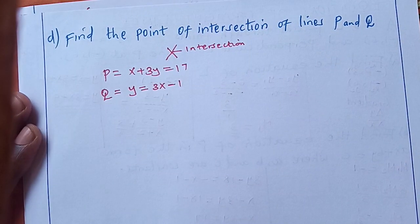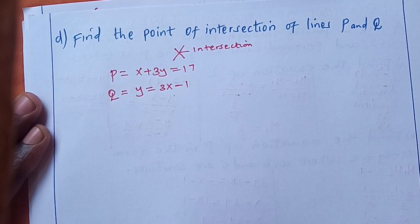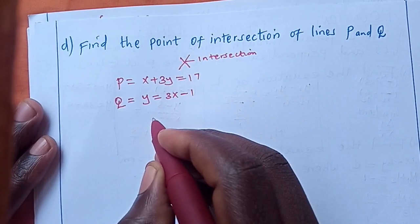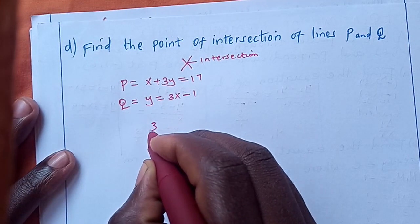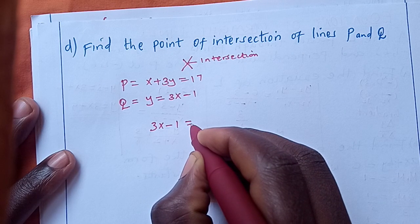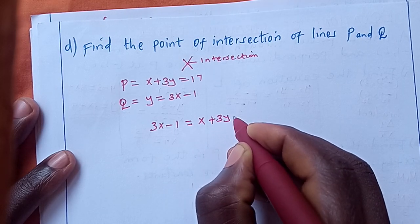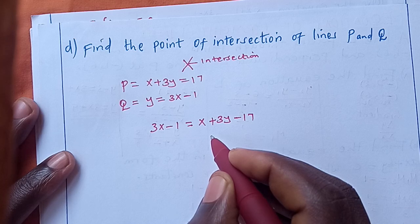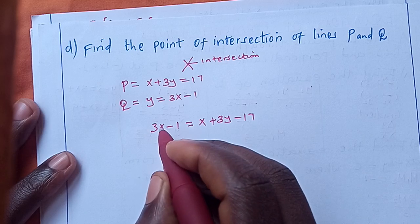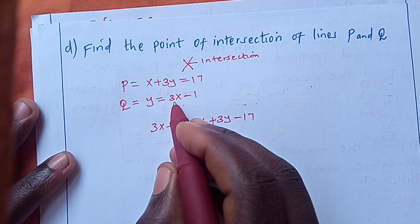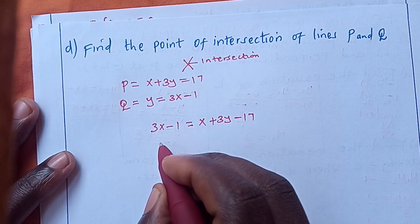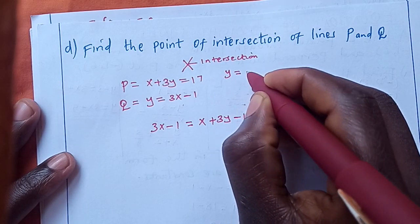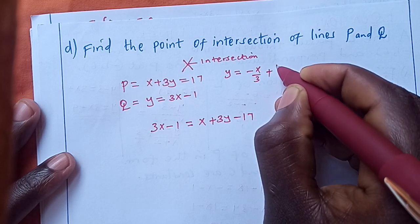We equate the two equations. We rearrange line P — from x + 3y = 17, we get y = -x/3 + 17/3. This is the correct equation we will use. So we set 3x - 1 = -x/3 + 17/3.